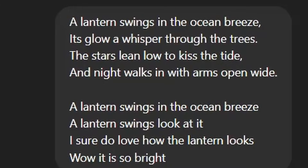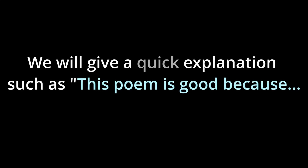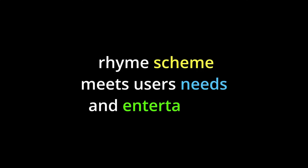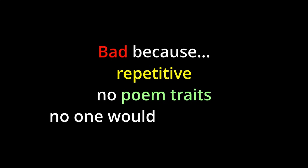The final thing we typically do with most rating jobs like this is give a quick explanation for anyone reviewing our work. We would say something like: the first poem is good because of the rhyme scheme, it meets the user's needs, and it's a pretty entertaining poem overall. And then we would state that the second one is bad basically for the complete opposite reasons — it is very repetitive, has basically no rhyme scheme, and frankly just sucks as a poem.